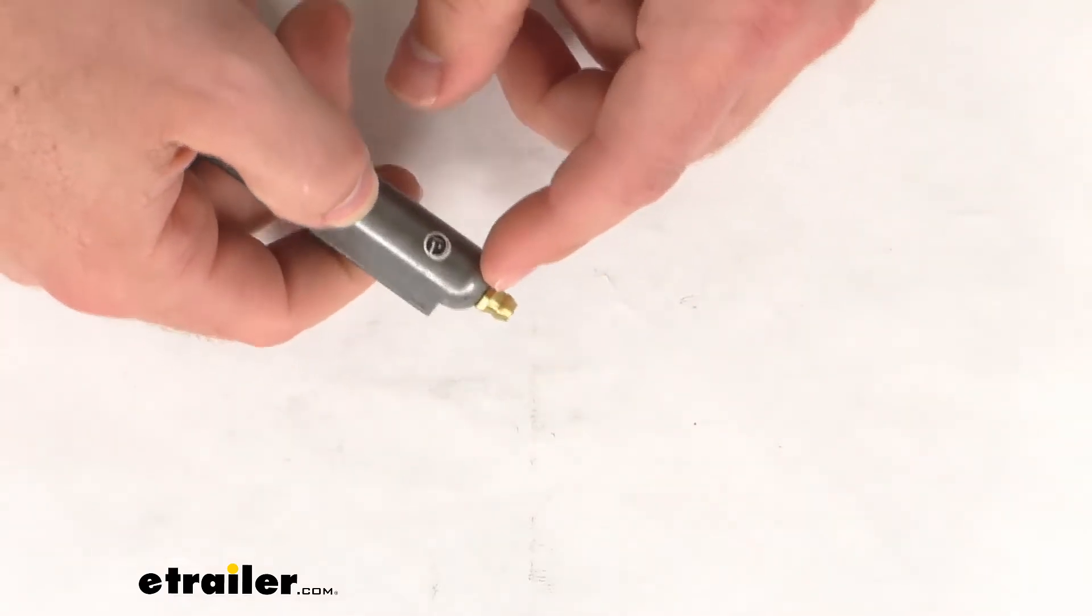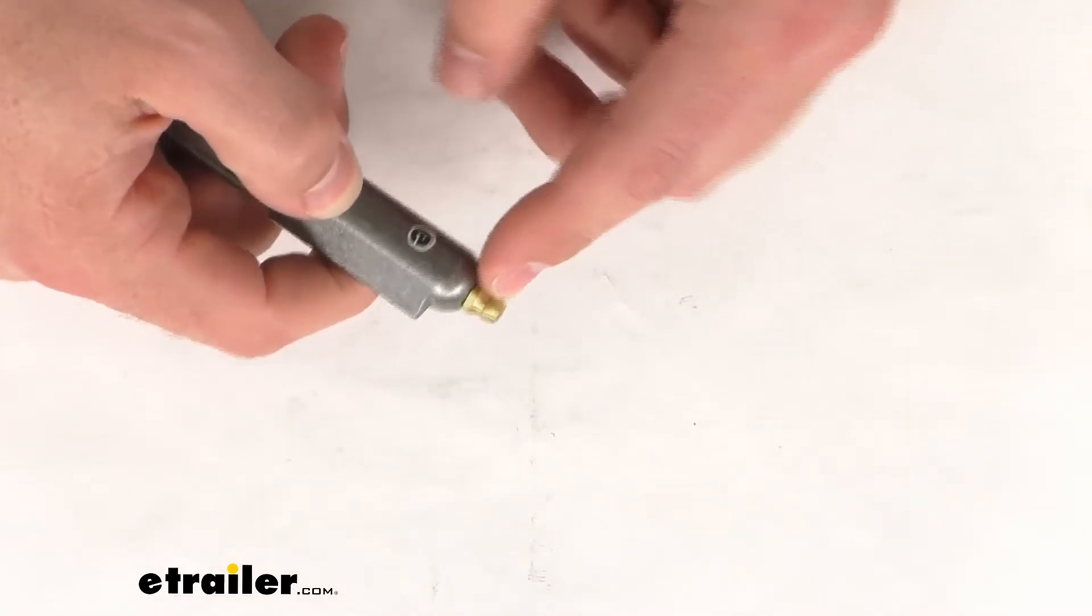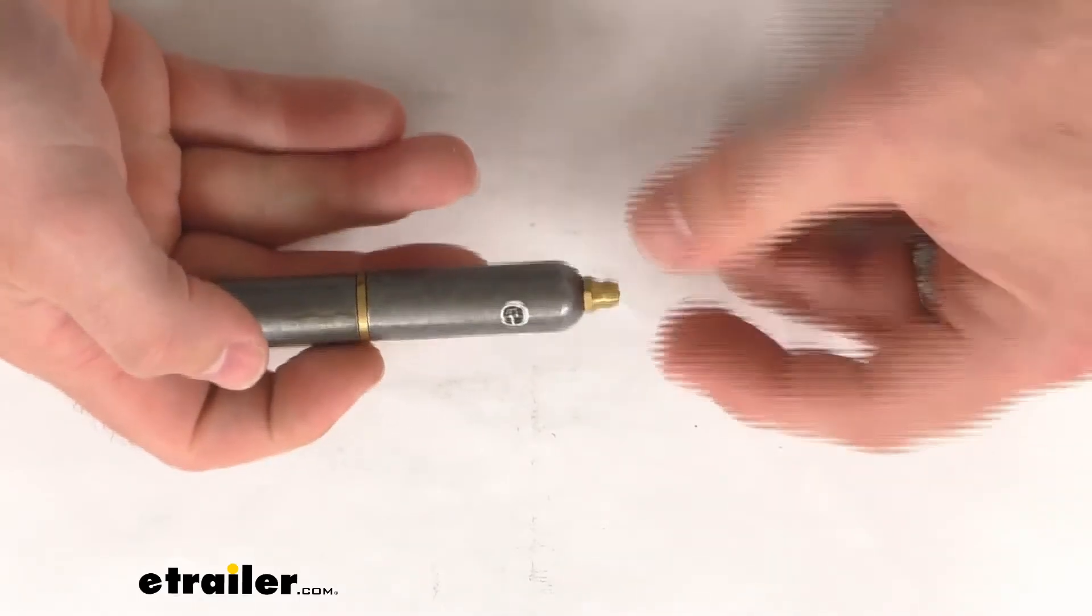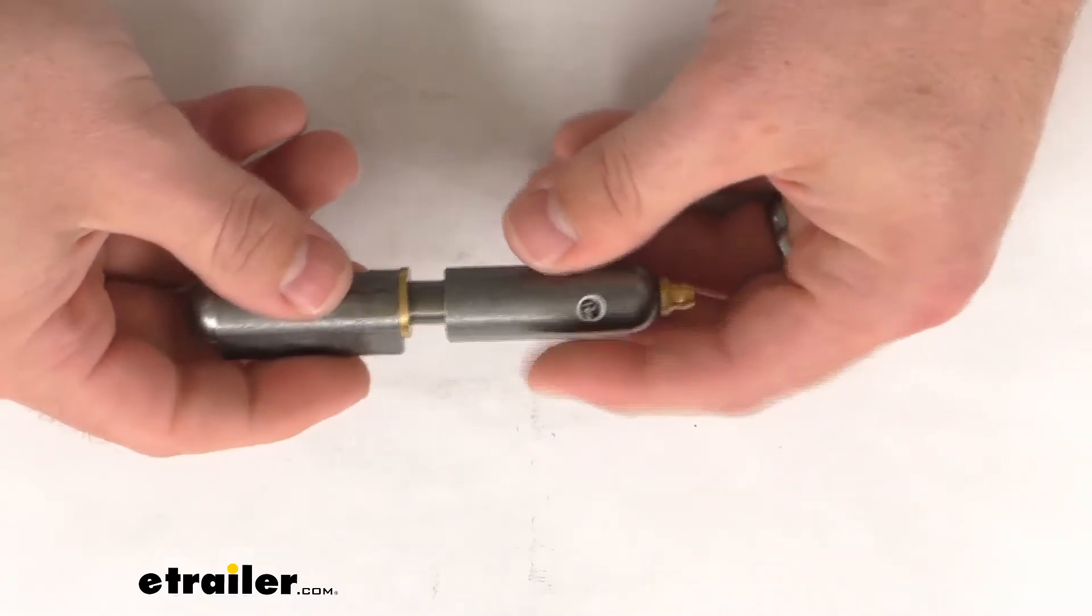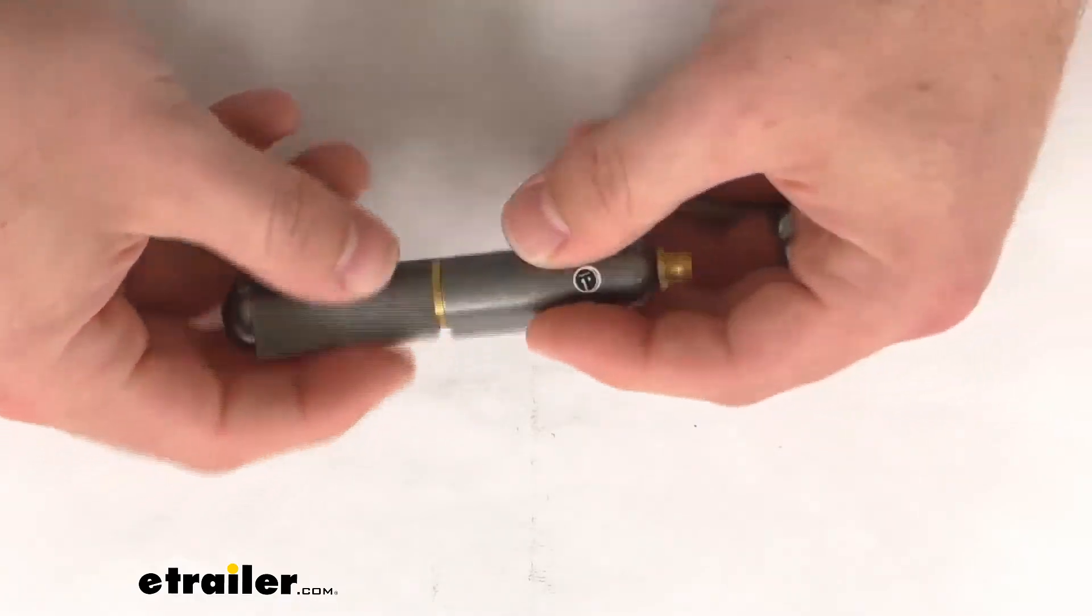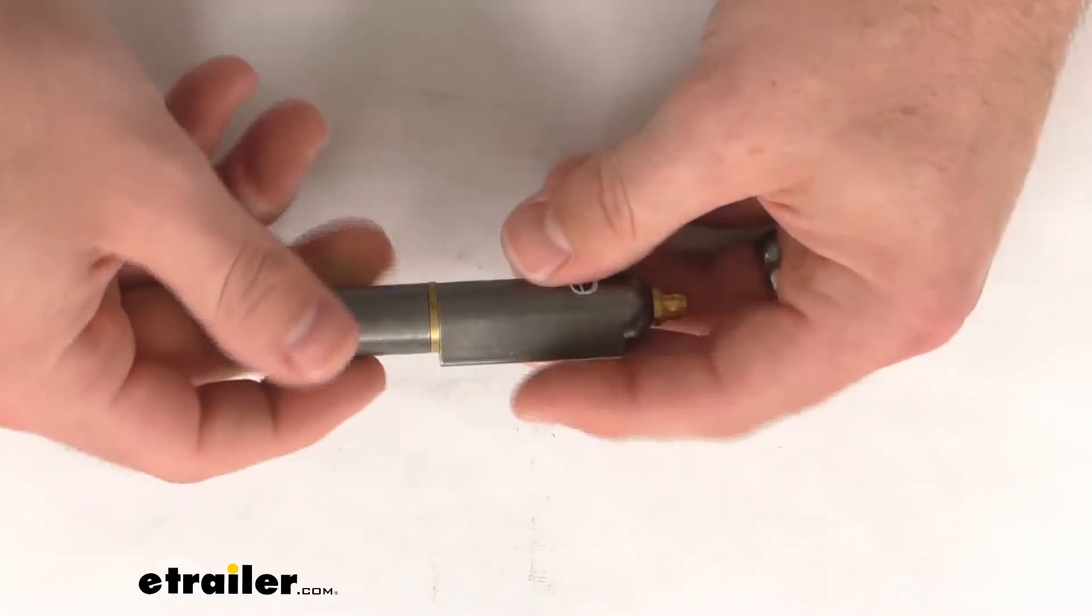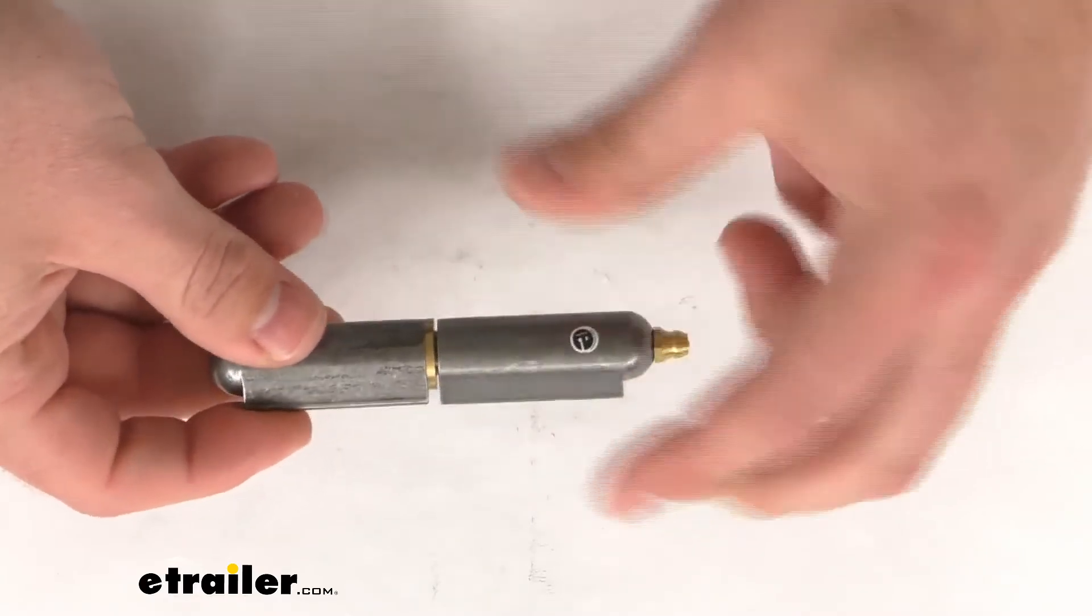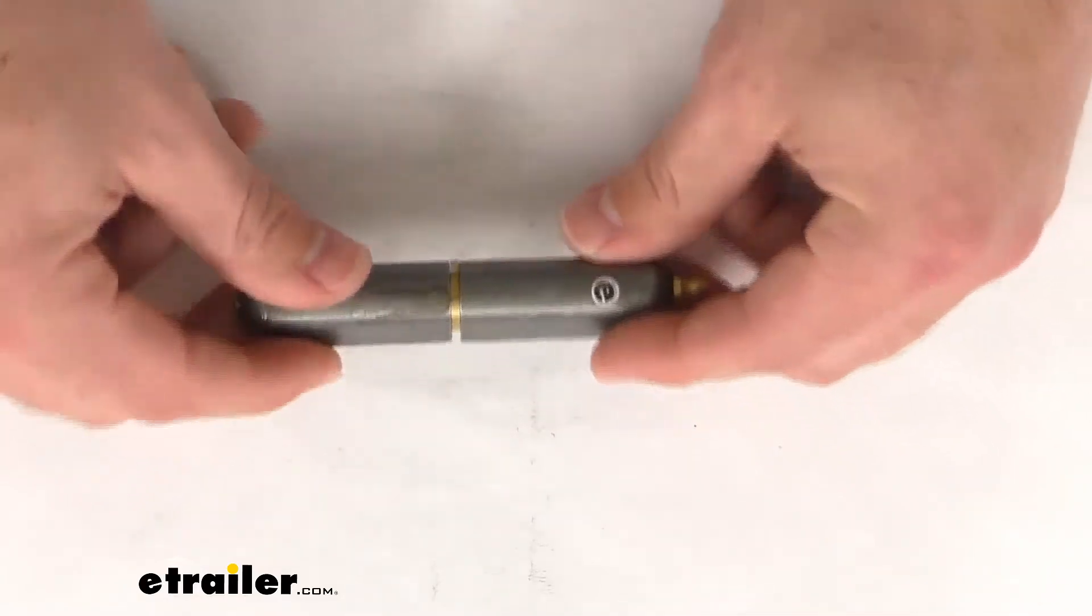Of course, we also do have this brass grease fitting here that's going to make it very easy to lubricate our hinge. Just hook up our grease gun, give it a little squirt, and that is going to put grease throughout our pin, make sure it's going to move and function properly, not going to get bound up or have friction.